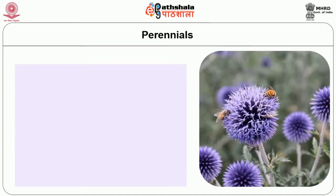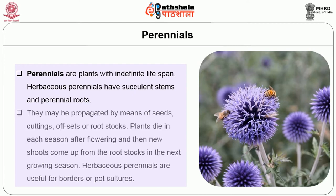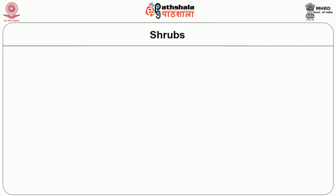Perennials are plants with an indefinite lifespan. Herbaceous perennials have succulent stems and perennial roots, and may be propagated by means of seeds, cuttings, offsets or rootstocks. Plants die in each season after flowering and new shoots come up from the rootstocks in the next growing season. Herbaceous perennials are useful for borders and pot culture.